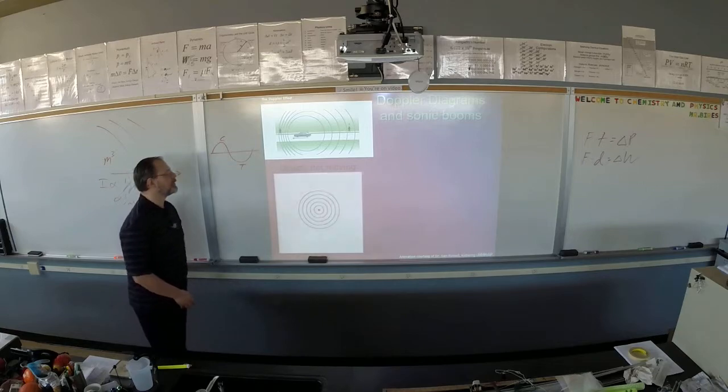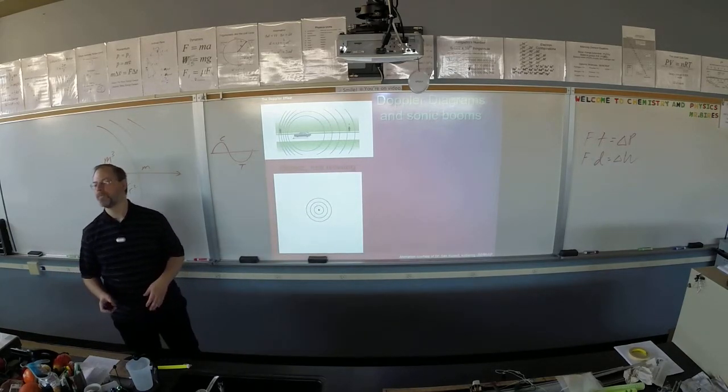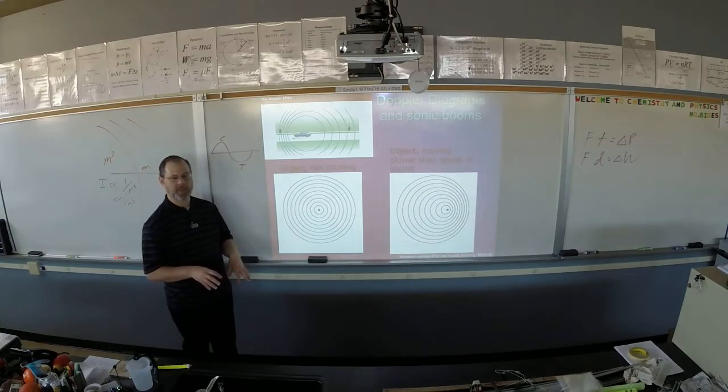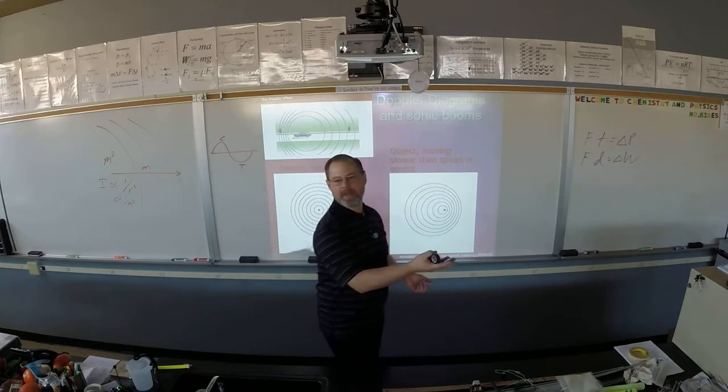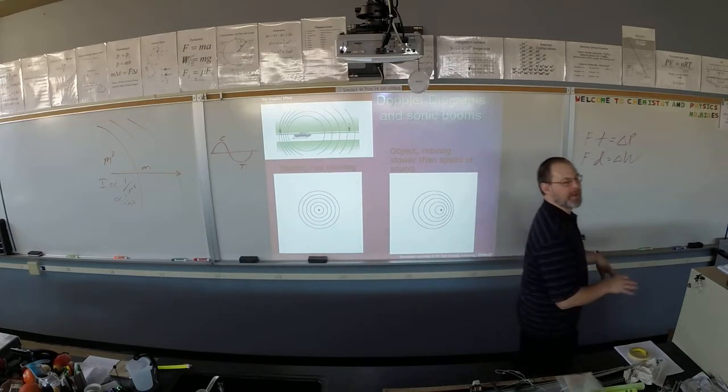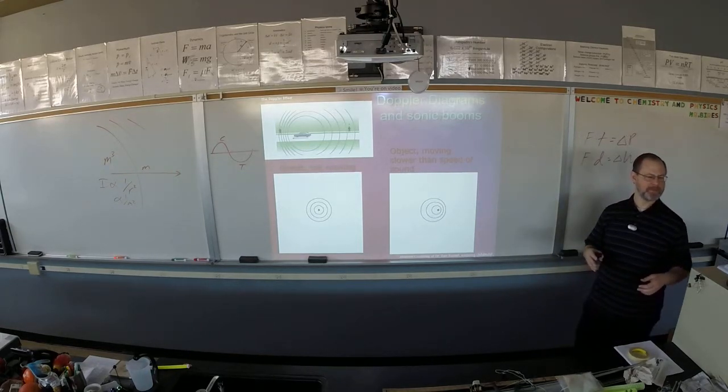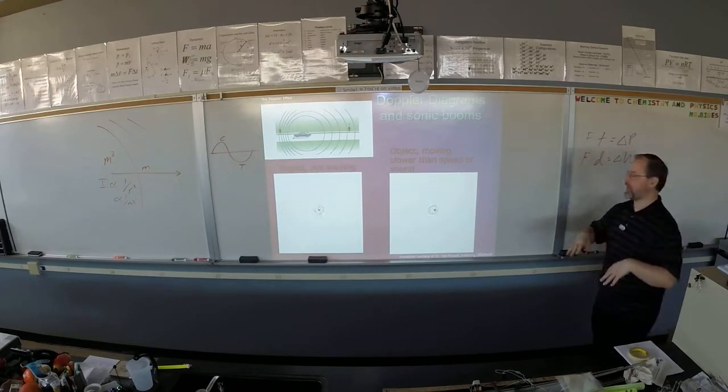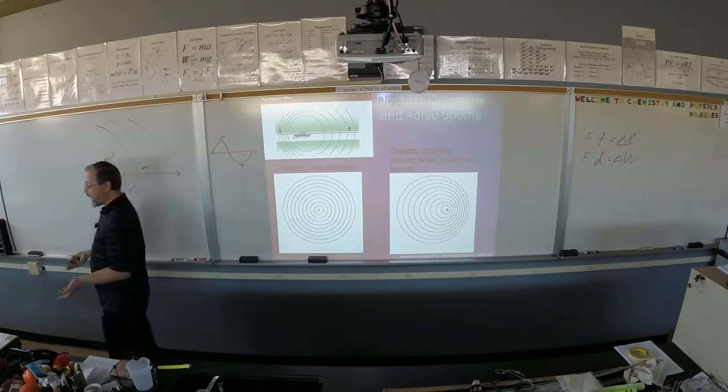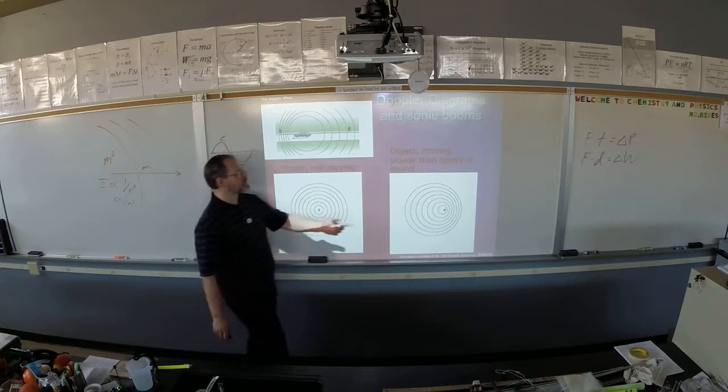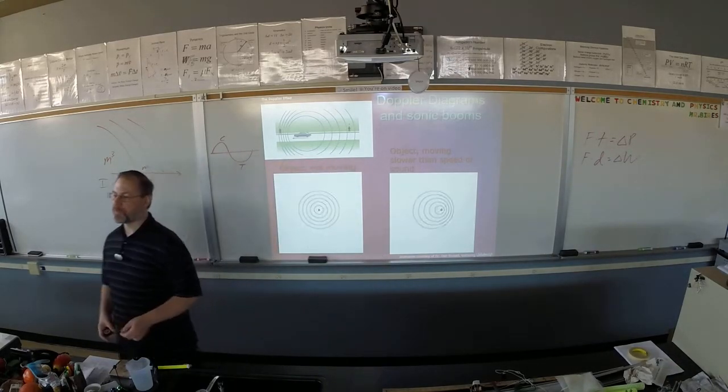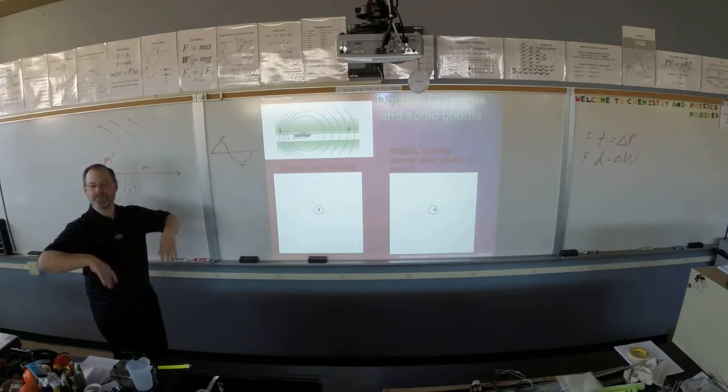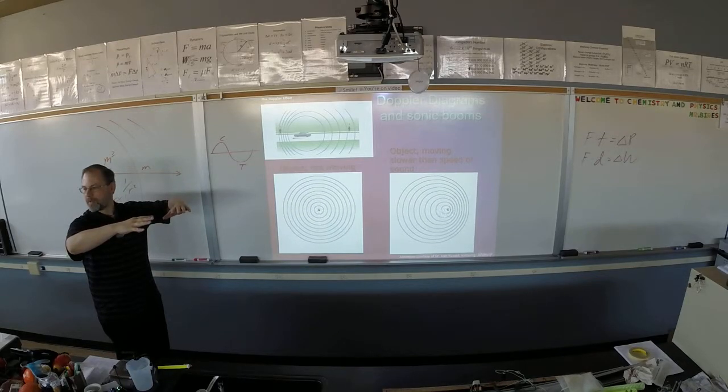Imagine you're in a pool and you make a splash and your waves travel out like this. Now imagine you're moving forward and make a splash, moving forward and make a splash. You make a splash and you swim forward and make a splash and swim forward. So you swim, splash, swim, splash, swim, splash. As you catch up to each splash you make another splash, so the wave fronts of your splashes pile up. Imagine you could swim as fast as the water moves. What would happen where if you made a splash and then swam forward? When you put your hands down, what are you hitting?